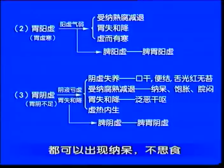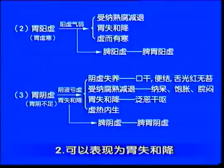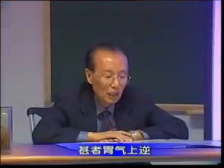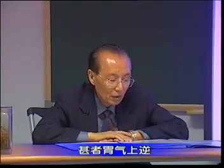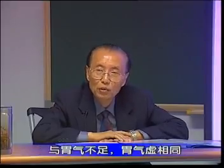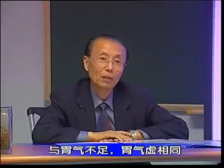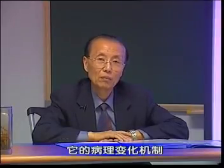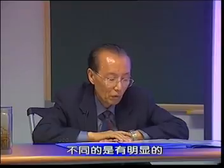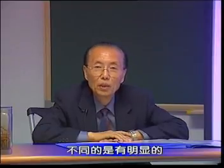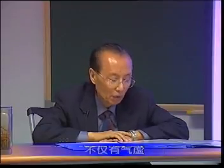胃阳虚与胃气虚相同之处：一、受纳腐熟功能减退，都可以出现纳呆不食；二、可以表现为胃失和降甚至胃气上逆。不同之处在于胃阳虚不仅有气虚，而且还有明显的阳虚外寒的改变。